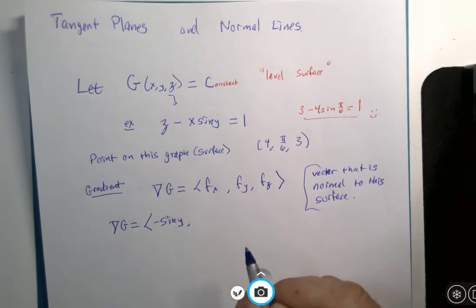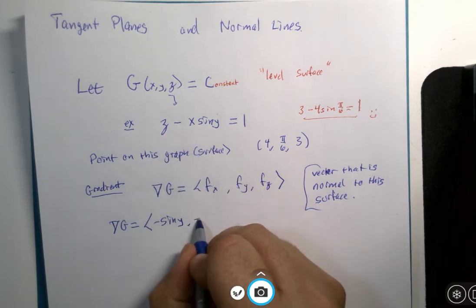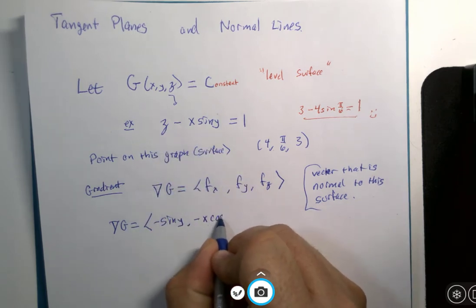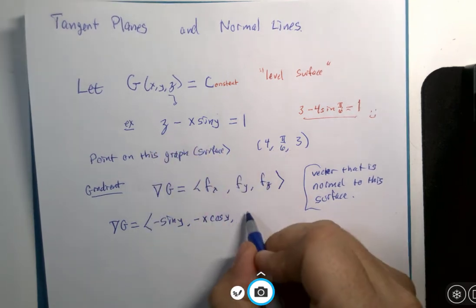And if y is the variable, that's going to be zero, derivative of sine is cosine, that would be minus x cosine y. And if z is the variable, I'm just going to get 1.